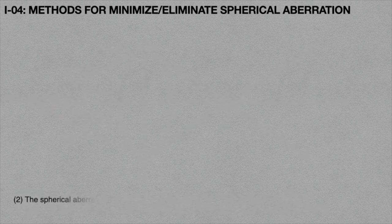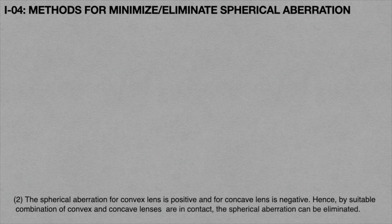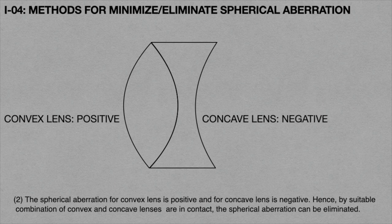The second method: since spherical aberration for a convex lens is positive and for a concave lens is negative, by using a suitable combination of convex and concave lenses in contact, the spherical aberration can be eliminated. You can see the animation to understand how this combination eliminates spherical aberration.